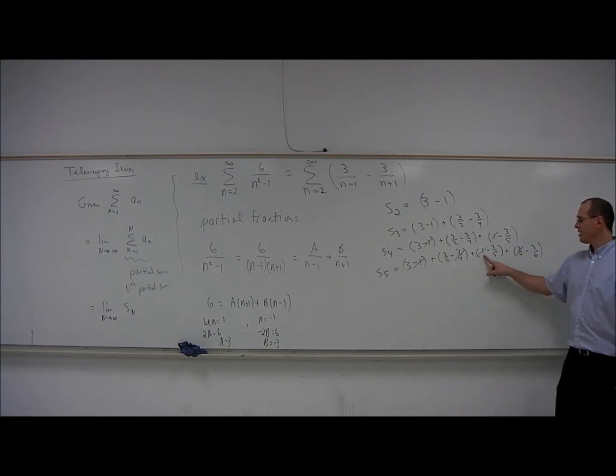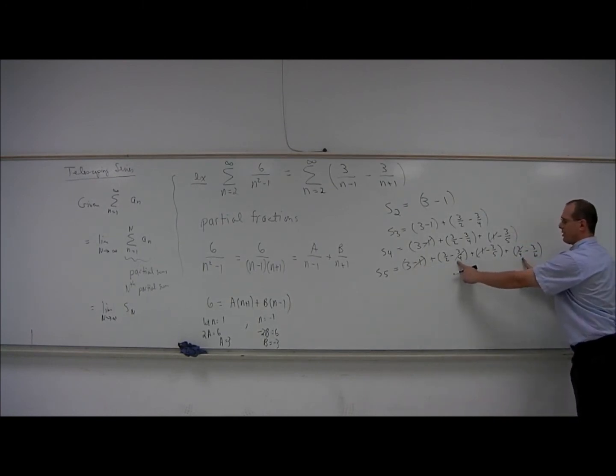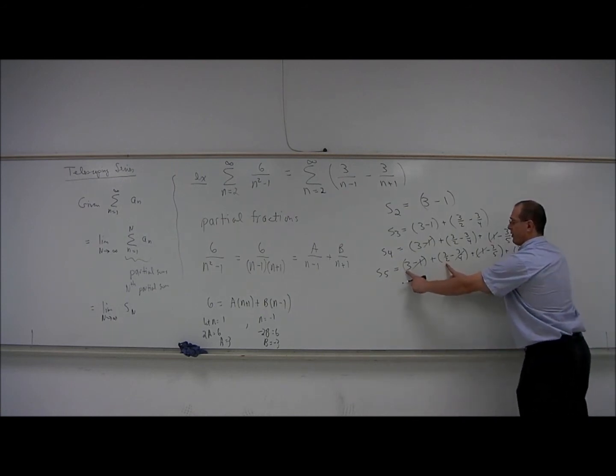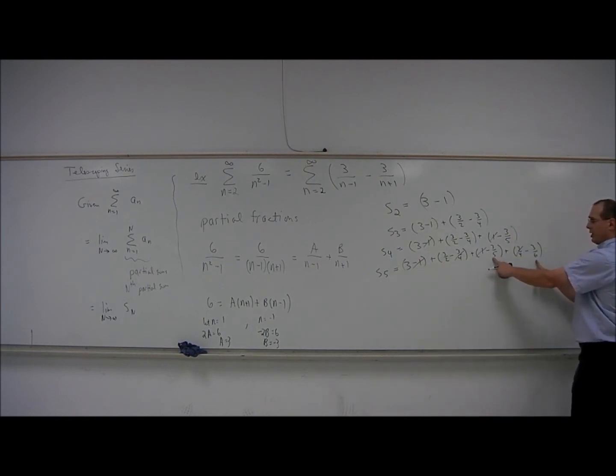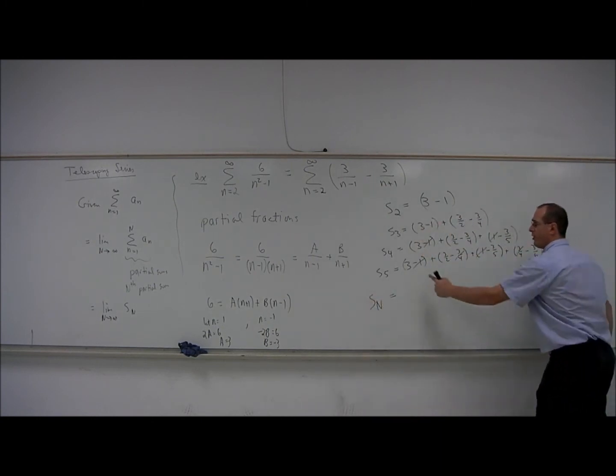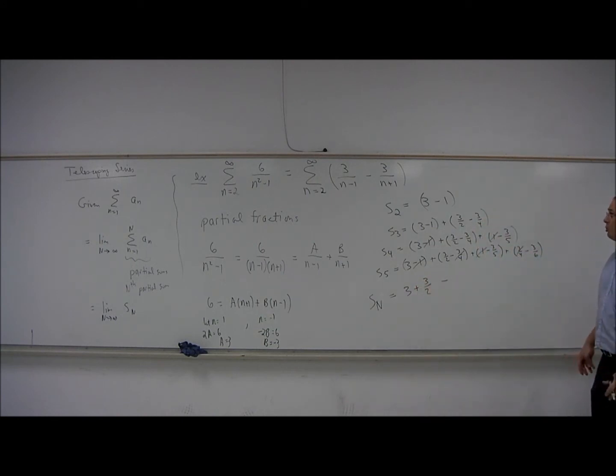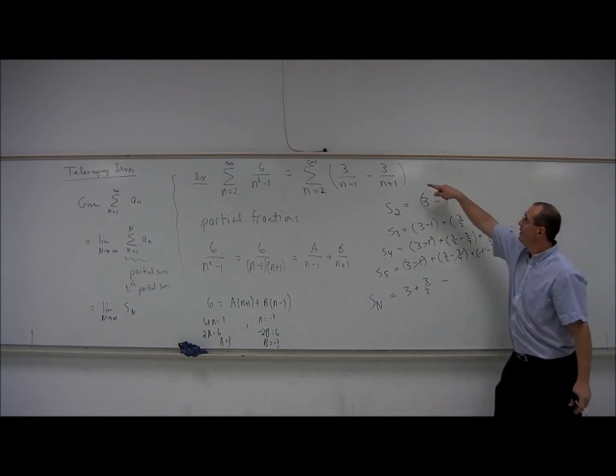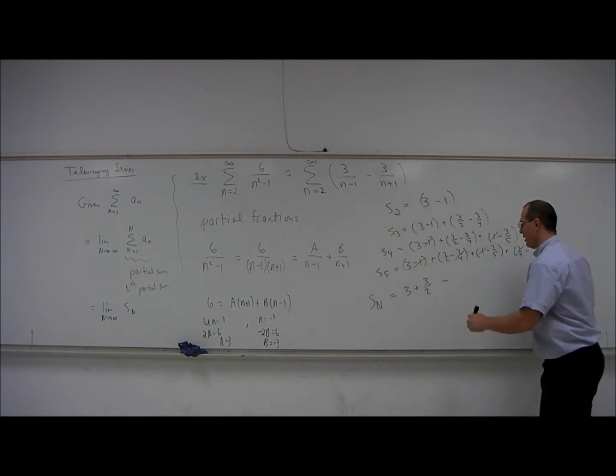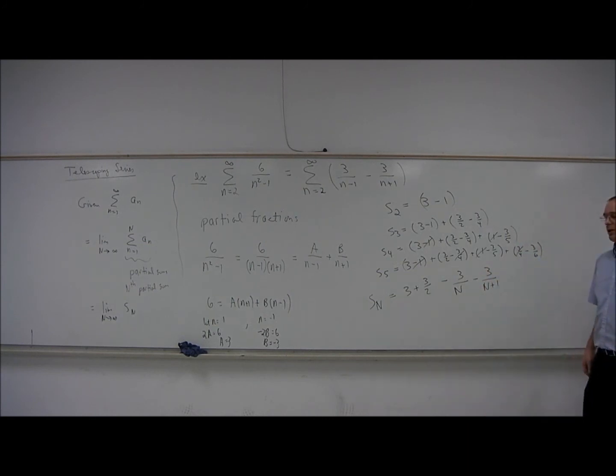So this negative 1 is going to cancel with this one, which is two terms down the line. And this negative 3 quarters is going to cancel with this positive 3 quarters, which is two terms down the line. And what we'll be left with is the first two terms and then minus the last two terms. So if we were to calculate S sub n, we would be left with the first two terms, 3 plus 3 halves, and then minus the last two terms. The last two terms are going to come from 3 over capital N plus 1, and the one before that, which would be 3 over capital N. So 3 over capital N minus 3 over capital N plus 1. So there's our formula.